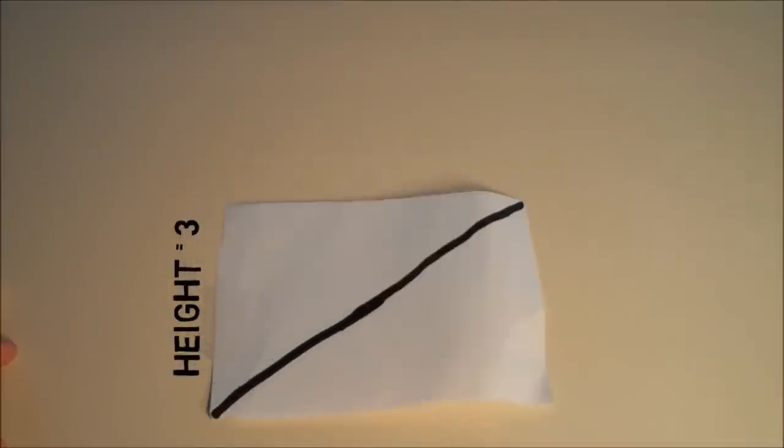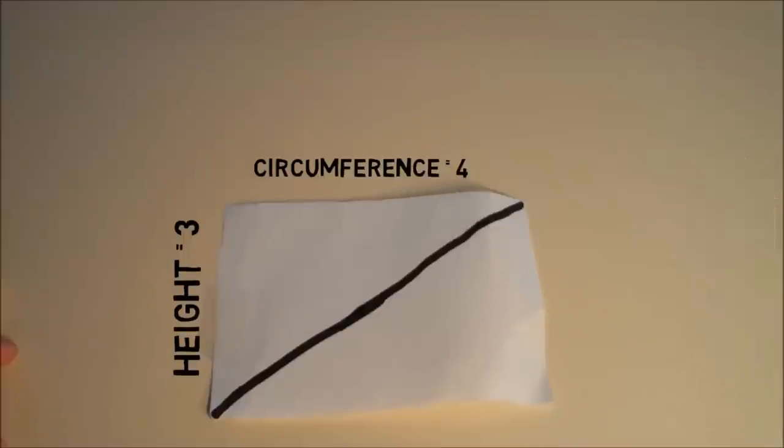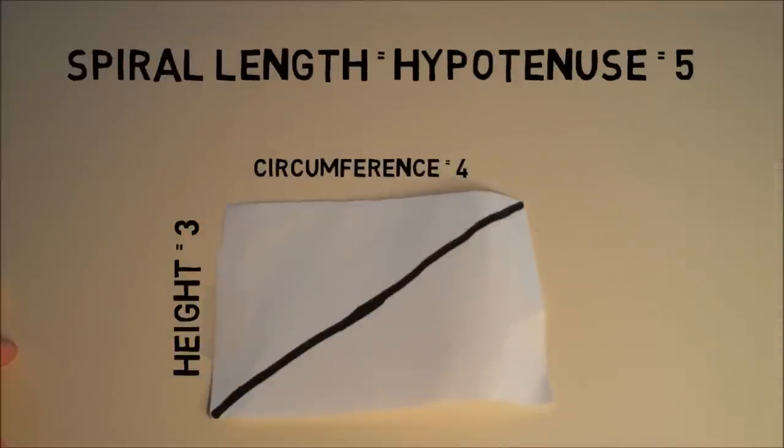This rectangle has a height of 3 and the length of the rectangle will be the circumference of the circle, which is equal to 4. So we can solve for the length of the spiral as the length of the hypotenuse of the right triangle with legs 3 and 4, and this will be equal to 5.